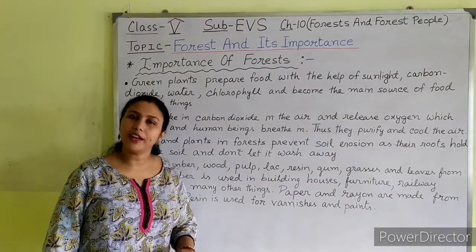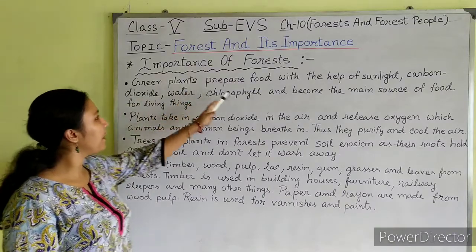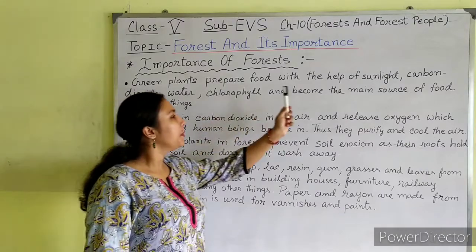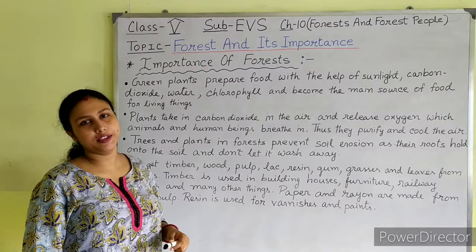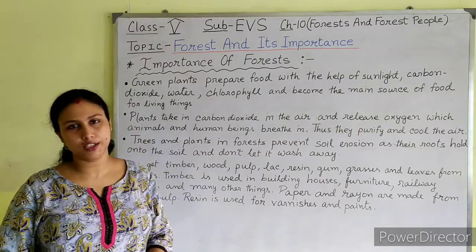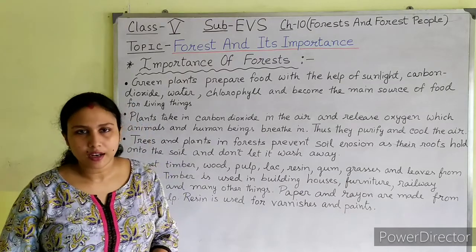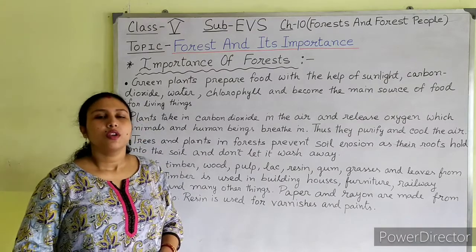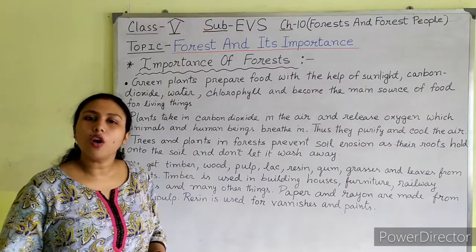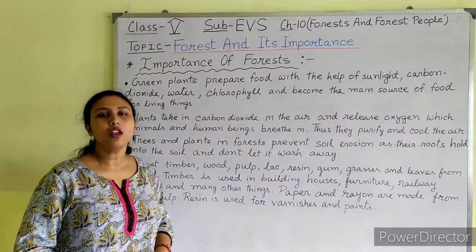Now we will learn about the importance of forests. First point: green plants prepare food by the process of photosynthesis, with the help of carbon dioxide, water, sunlight, and chlorophyll present in their leaves. So green plants produce food for themselves and in turn become the main source of food for all living things.